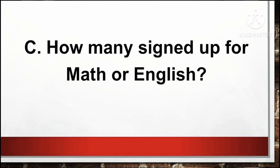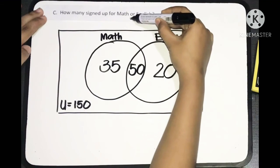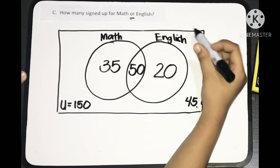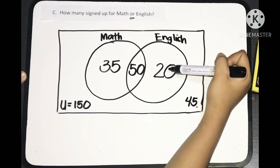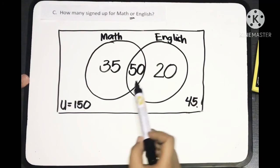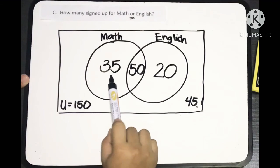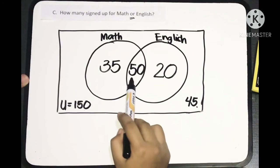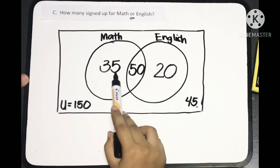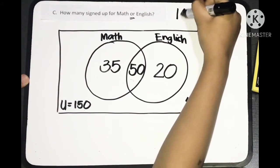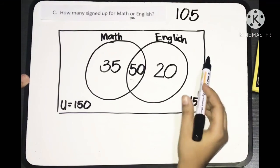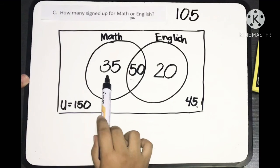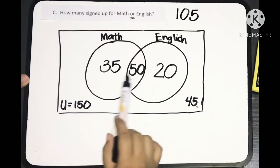For the third question: How many signed up for math or English? Since we have here the conjunction 'or,' meaning to say we will use the union of set. To find the union of the two classes, math and English, we're going to include the students who registered for math only and English only as well as their intersection. Earlier we already totaled this which equals 105. Remember that when it's 'or' it is union of set, so we combine.